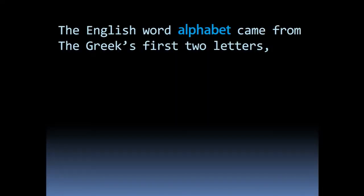The English word 'alphabet' came from the Greek's first two letters: Alpha and Beta.